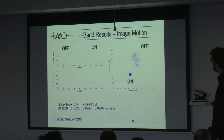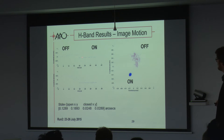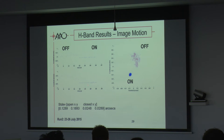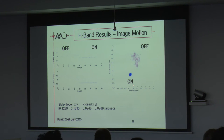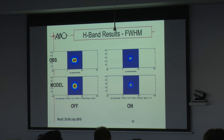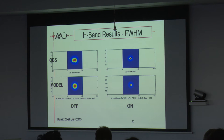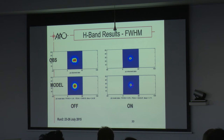Looking at the image motion results: you can see it varying up and down here between 0.5 arcsecond amplitude, and when you turn the AO system on the image motion is compensated. The scatter plot shows the centroid or image motion when AO is off versus on — we're getting good results for image motion correction. Looking at the full-width half-maximum in the H-band, when we average the frames together we get a broad image, but when we turn AO on we go from 2 arcseconds down to 0.76 arcseconds — this is partial correction.